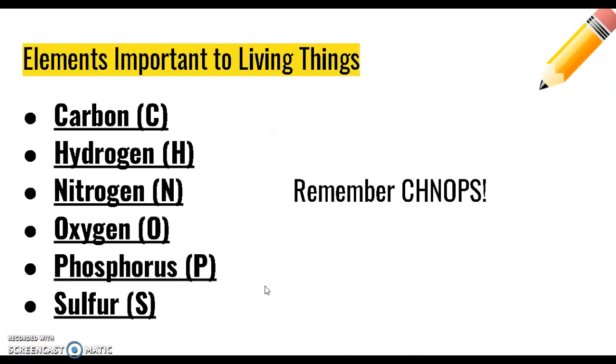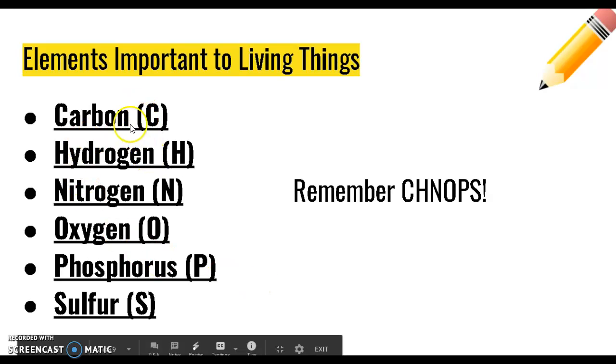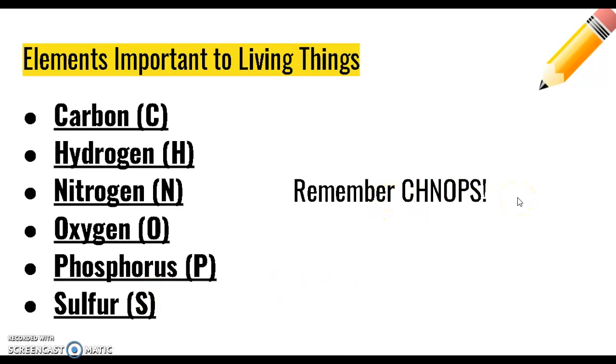In bio, we care about six of those elements in that periodic table of elements: carbon and hydrogen because they're what makes molecules organic, nitrogen, oxygen, phosphorus, and sulfur. If you remember CHNOPS, you'll remember the six elements that are important to living things.